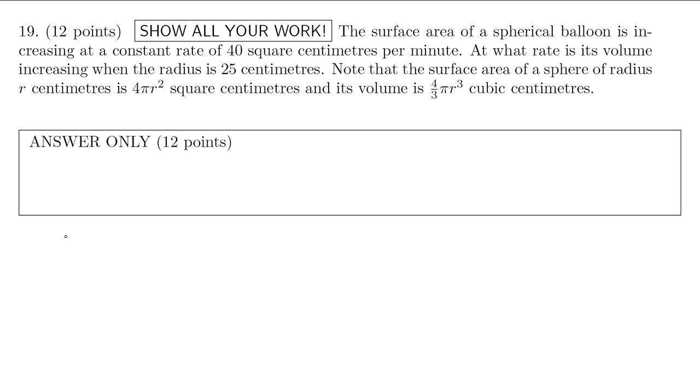So usually when I do related rates I like to write given what we're given and what we want. So let's read that first sentence really carefully and try to come up with what that means in terms of a mathematical statement. So the surface area, we can write that with A or S. Why don't we write S?